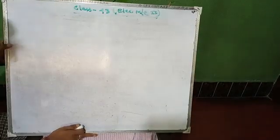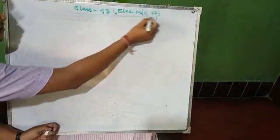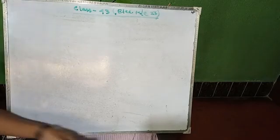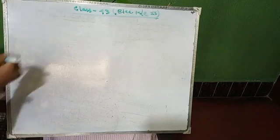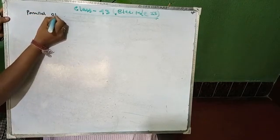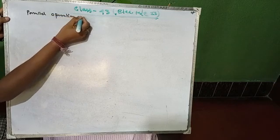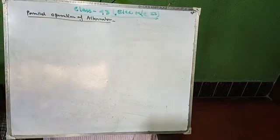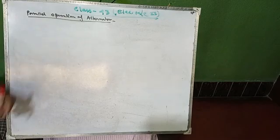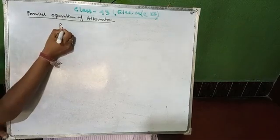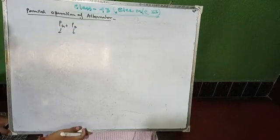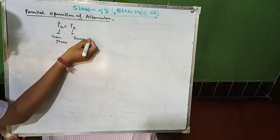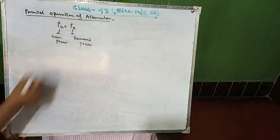Hello everyone, this is class number 43 for Electrical Machine 2. In this class, I have to complete the alternator parallel connection. At steady state condition, PG equals PD — that means generating power equals demand power.